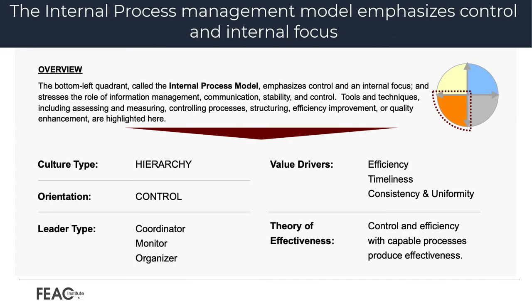The internal process model emphasizes control and internal focus. In the bottom left quadrant, the emphasis is on control and internal focus, and stresses the role of information management, communication, stability, and control. Tools and techniques including assessing and measuring, controlling processes, structuring, efficiency improvement, or quality enhancements are highlighted here.